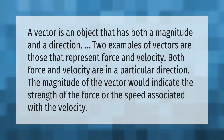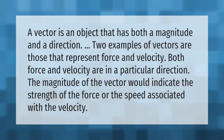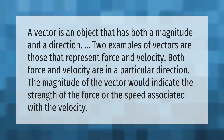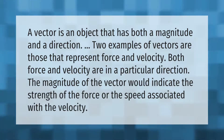A vector is an object that has both a magnitude and a direction. Two examples of vectors are those that represent force and velocity — both force and velocity are in a particular direction. The magnitude of the vector would indicate the strength of the force or the speed associated with the velocity.